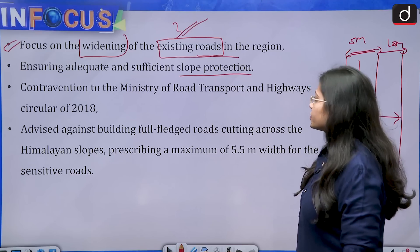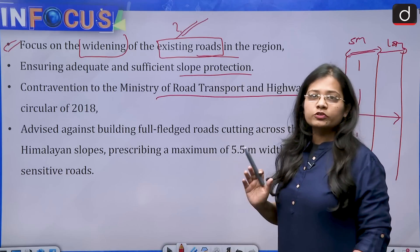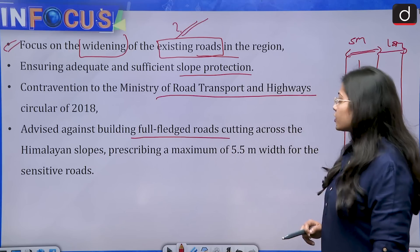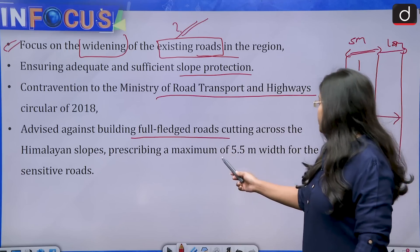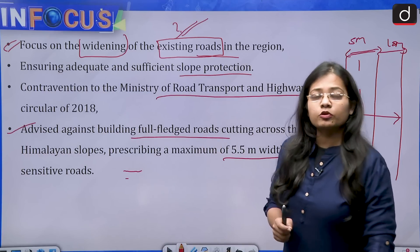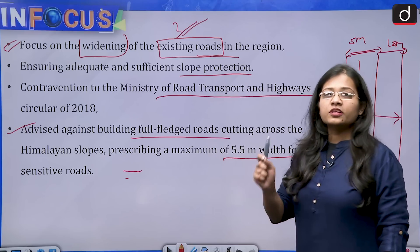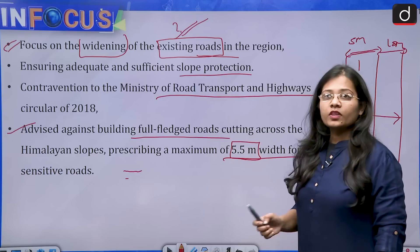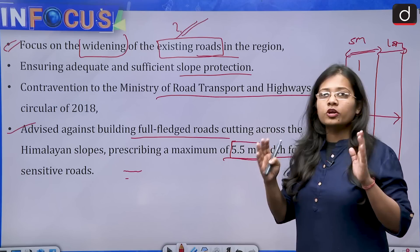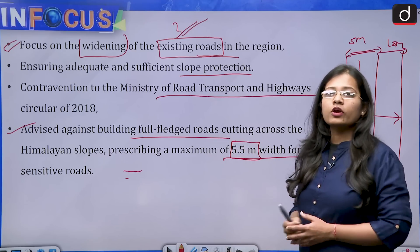The Ministry of Road Transport and Highways, which is associated with the Char Dham Project, advised against building full-fledged roads cutting across Himalayan slopes, prescribing a maximum width of 5.5 meters for sensitive roads. However, the roads being constructed were much wider — around 10 to 12 meters — which is where the problem lay.